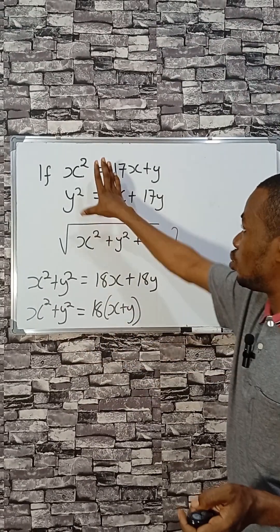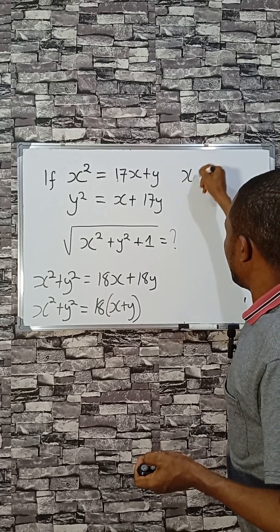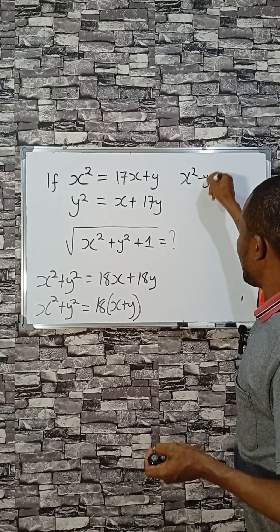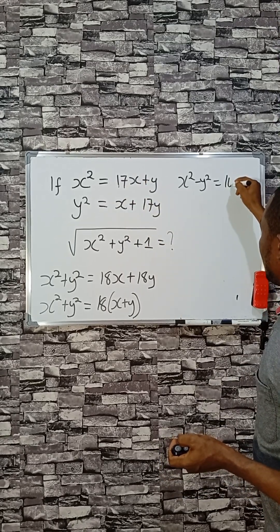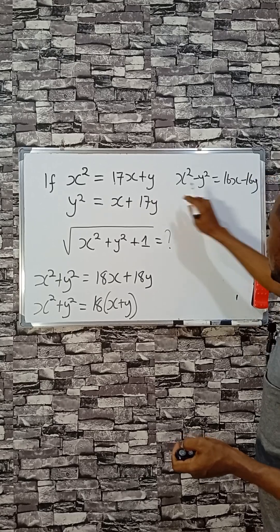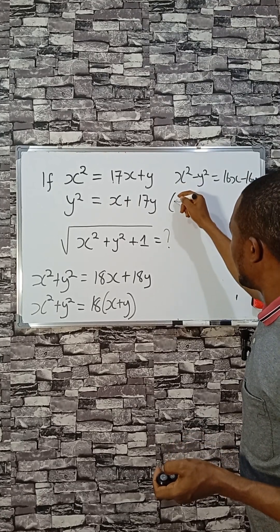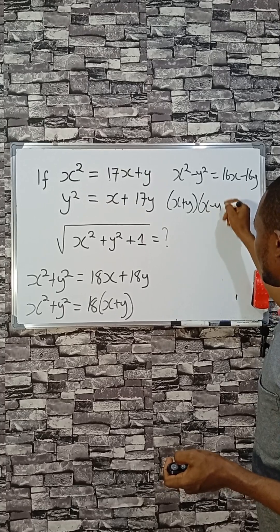We got this from addition. What if you do subtraction? That will be x² minus y². This minus this will give you 16x, then this will give you minus 16y. Difference of two squares: (x+y)(x-y). In factorizing, we have 16 times (x-y).